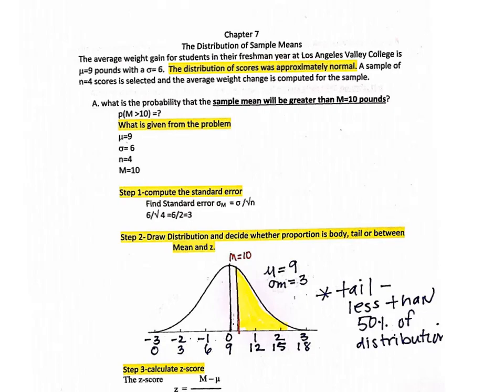Hello, this is Ruby. Today we're going to be talking about Chapter 7, the distribution of sample means.